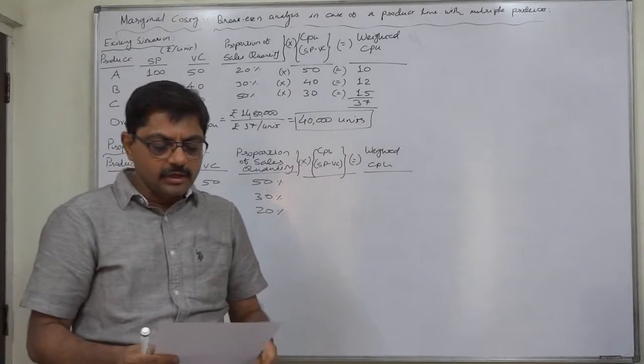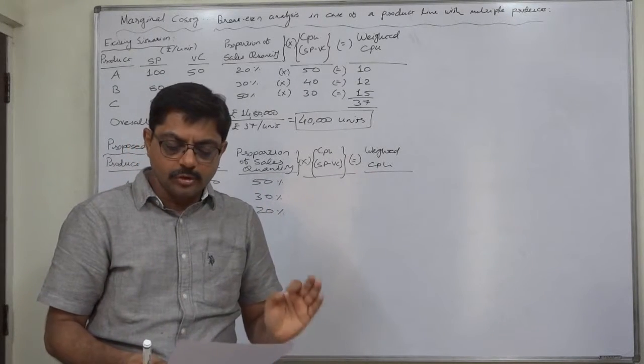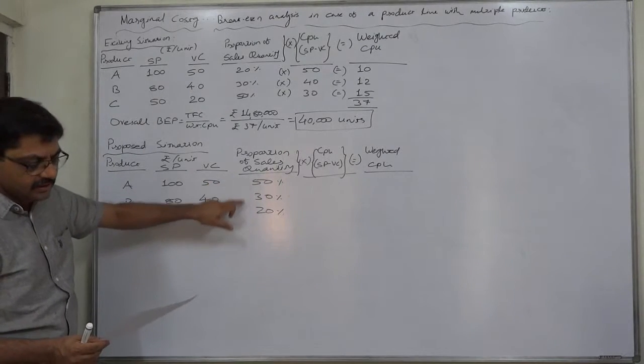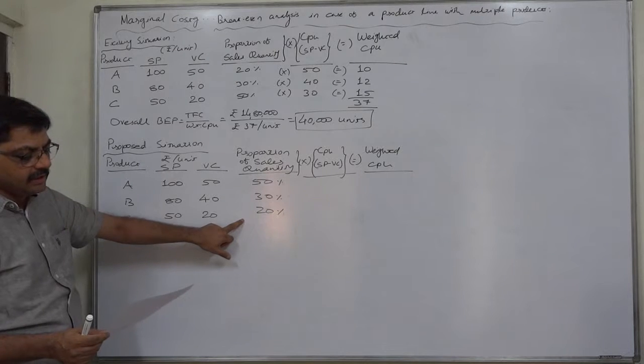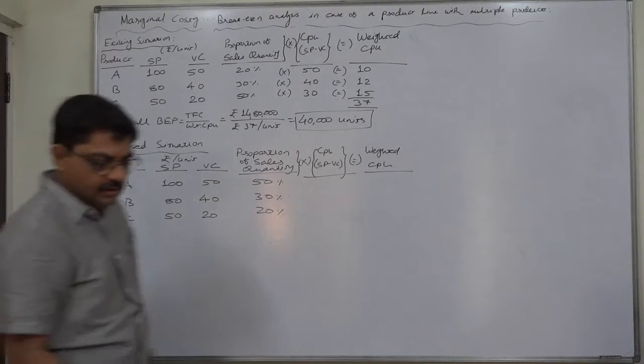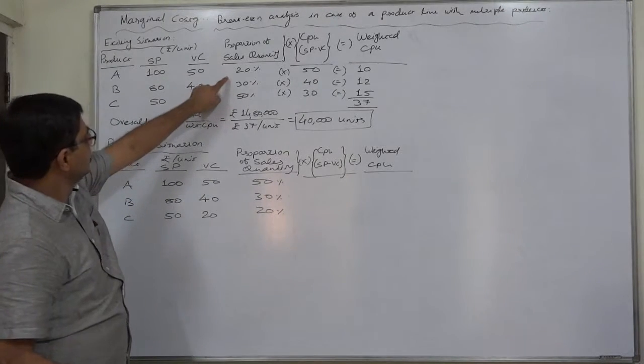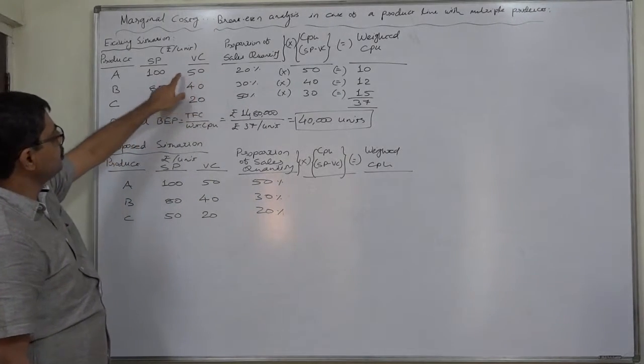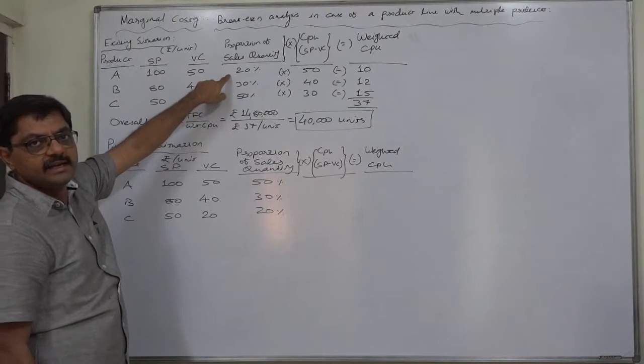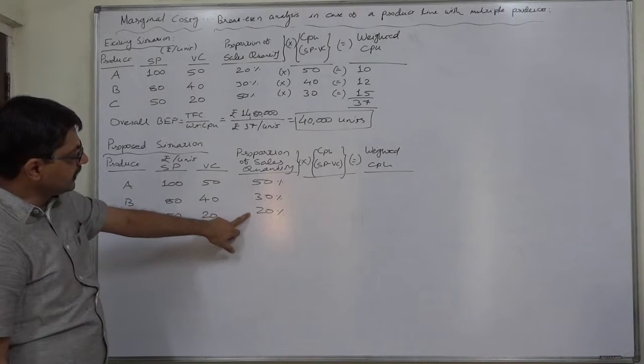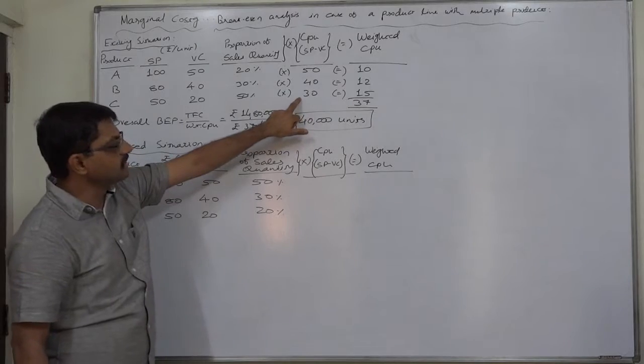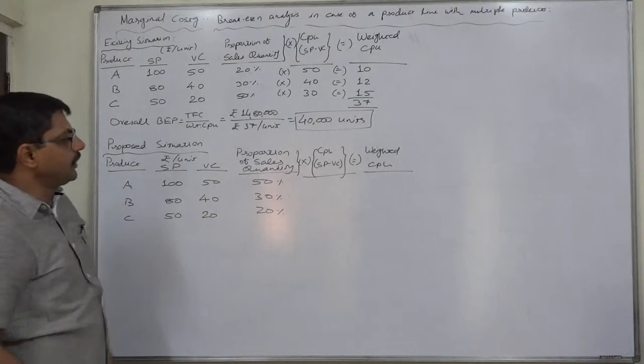Now would it be advisable for the company to change the proportion of sales quantity to 50%, 30%, and 20% respectively if the situation of the market demand allows it? The company wants to change this proportion. A has the highest contribution, so the company wants to increase the sales of A. On the other hand, the company wants to decrease the sales of product C, which has the lowest contribution per unit.